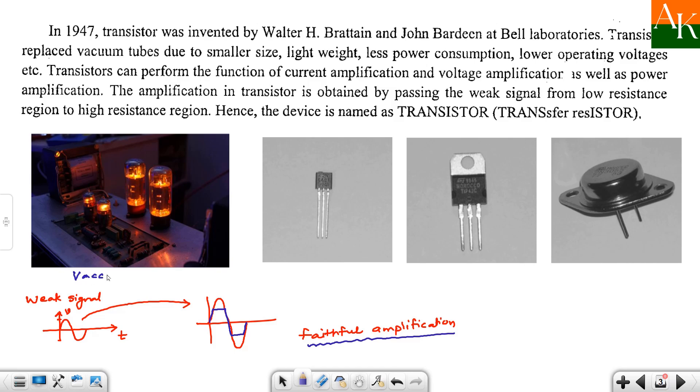Earlier we used to have vacuum tubes for such amplification purpose. But if you see vacuum tubes, you have got tetrod, pentrod, which is the grid, cathode, anode and depending upon the heating of cathode the electrons get or whatever carriers will get emitted. They were bigger in size. Compared to that nowadays we have transistor and when you are talking about transistor and if you see the diagrams over here then transistor has smaller size, light weight, less power consumption and lower operating voltage.